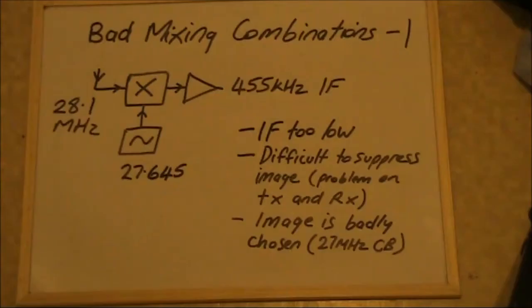There are some combinations that are bad and should be avoided. In this case, we have a high receive frequency and a low intermediate frequency. That's very prone to spurious signals if a transmitter and spurious responses if a receiver. It's doubly bad in this example because the image band is 27 MHz CB. So you're likely to be getting breakthrough from CB stations as you tune across 28 MHz.